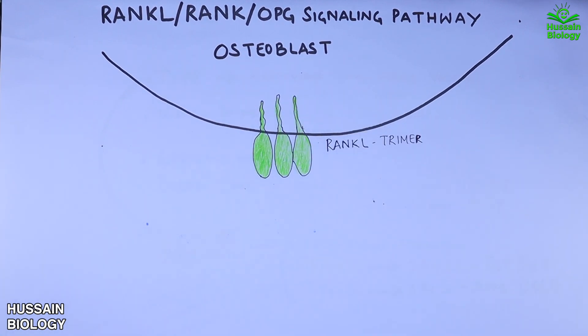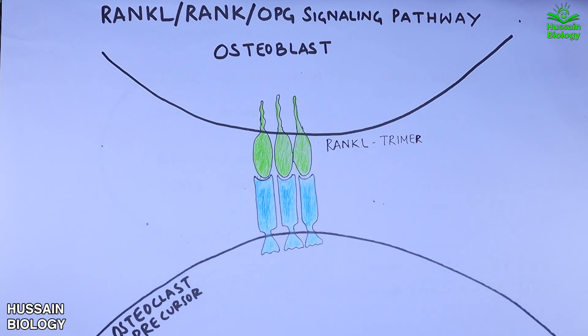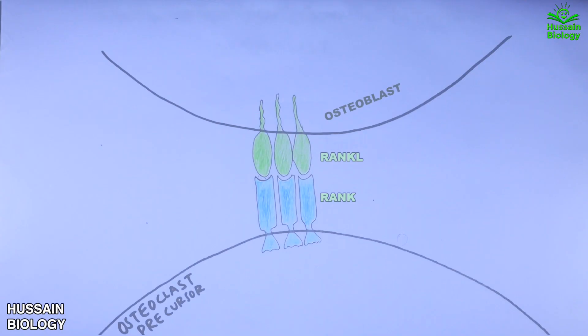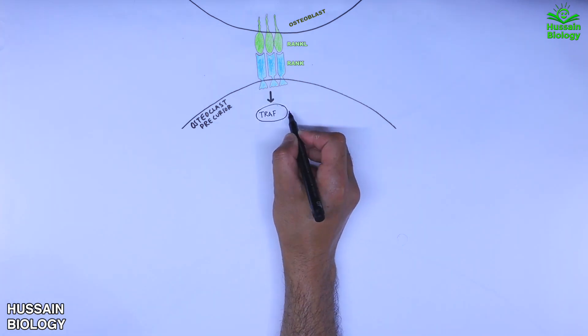Now let's start the signaling pathway in detail. In this diagram we have the osteoblast expressing the RANKL trimer, and the osteoclast precursor cell comes in and binds with the RANKL of the osteoblast. It is the RANK protein of the precursor osteoclast cell that interacts with RANKL.